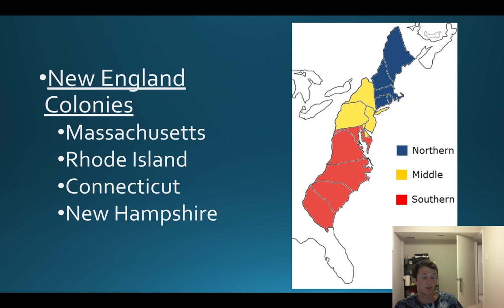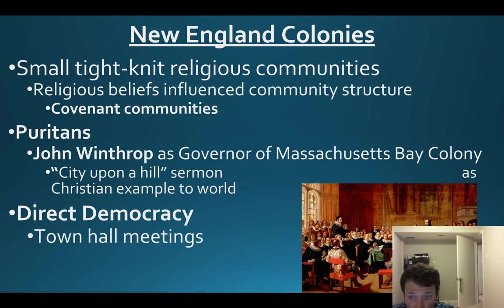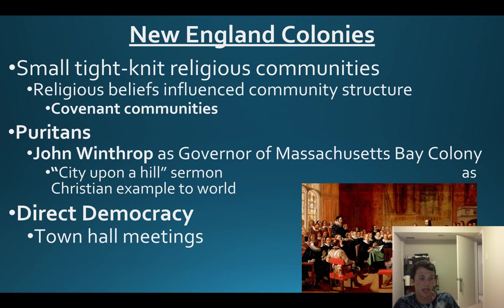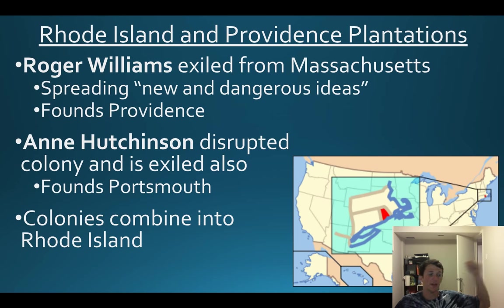The northern colonies - the New England colonies - are Massachusetts, Rhode Island, Connecticut, and New Hampshire up at the top. You should be aware of them. There are covenant communities, small tight-knit religious groups. John Winthrop is the governor of Massachusetts Bay; they have direct democracy in town hall meetings.